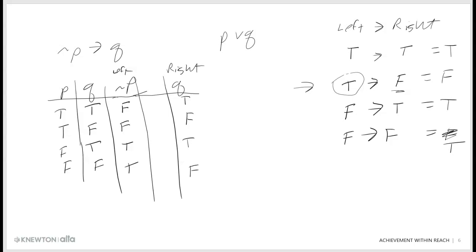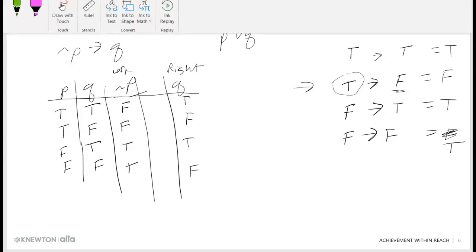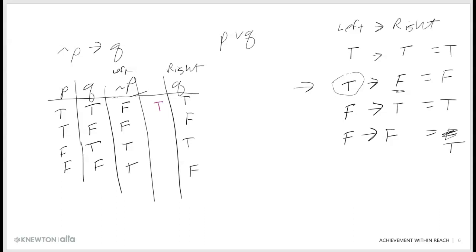This is the left and this is the right side of that if-then. Anytime I have a false on the left, my answer is automatically true. My answer column goes: true, true, false, true. If true then true — I made a promise, I kept it. If true then false — I made a promise, I didn't keep it. If I do the truth table for P or Q, it goes true, true, true, false. These are the same, therefore they are equivalent.